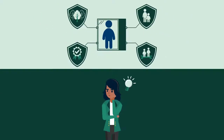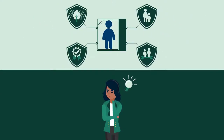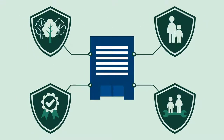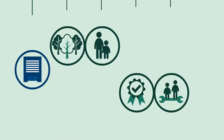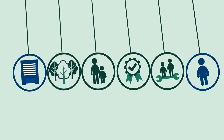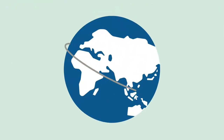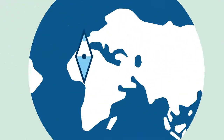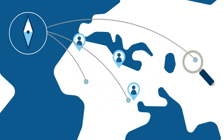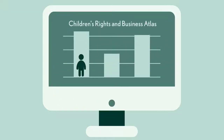In a global, interlinked, and interdependent world, how should you as a company navigate your direct and indirect impacts on children and decide where to focus? You need to prioritize. The Children's Rights and Business Atlas helps you do that.